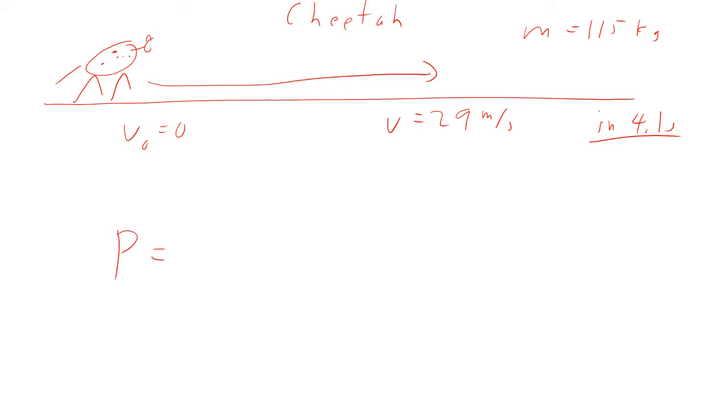Well, average power is going to be the change in energy over time. The only kind of energy we've talked about is kinetic energy, the change in kinetic energy over time. So change in kinetic energy, we start at zero, we end at one half mv squared over time.